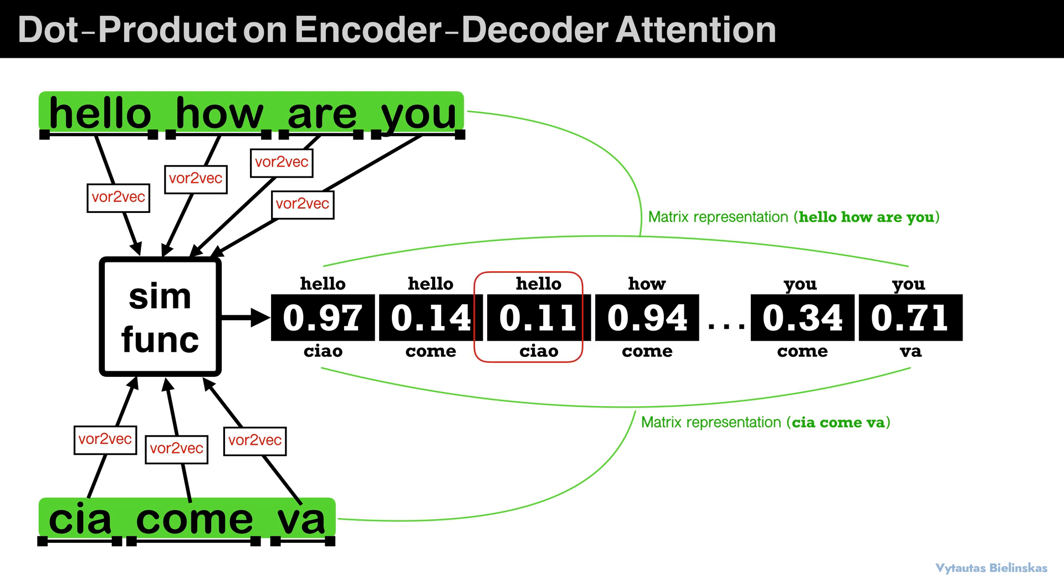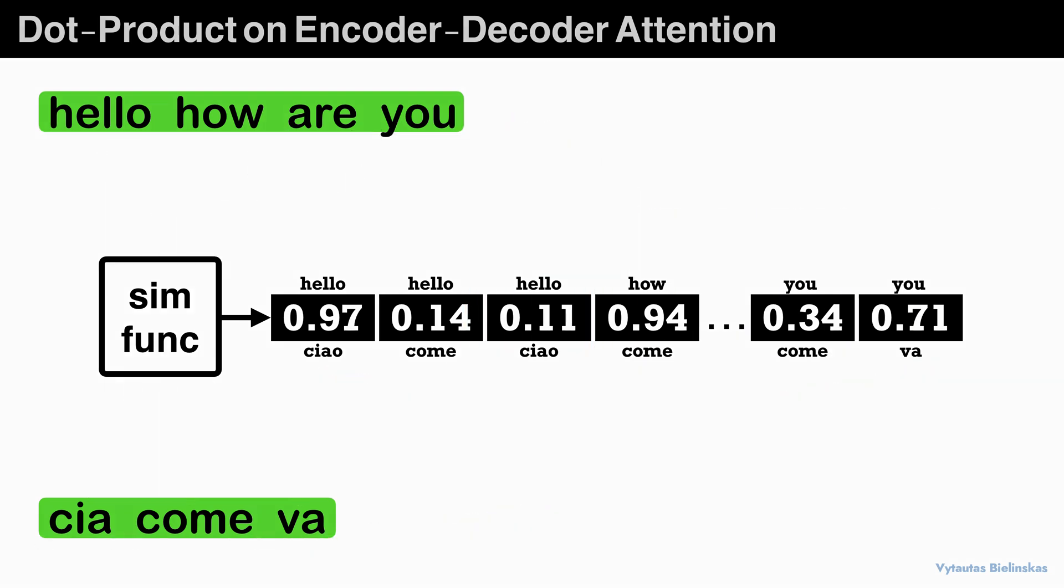This is what I am showing here. We have the English phrase hello, how are you. We map it against ciao come va in this similarity function, which is our attention mechanism.